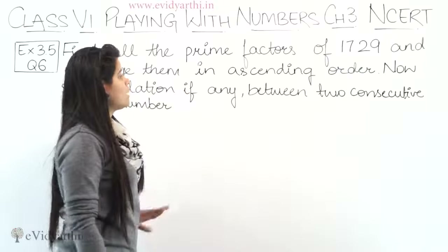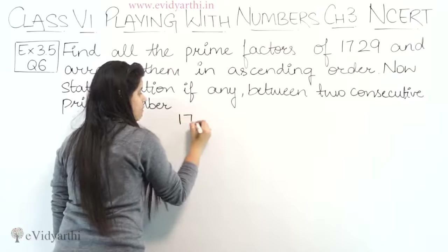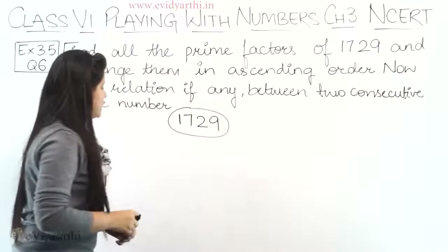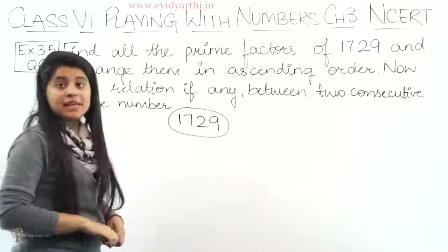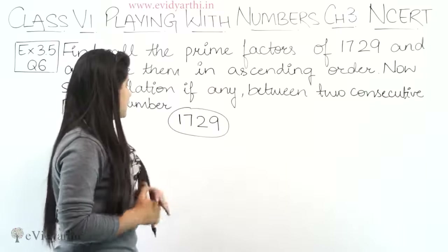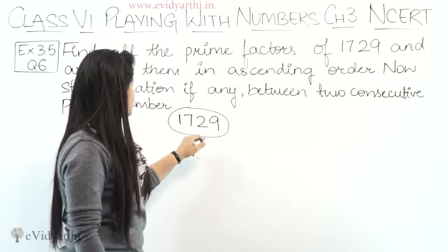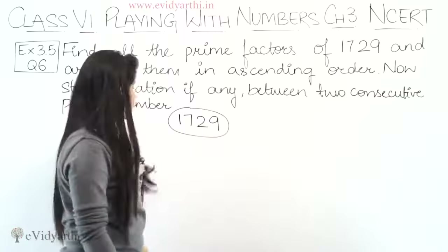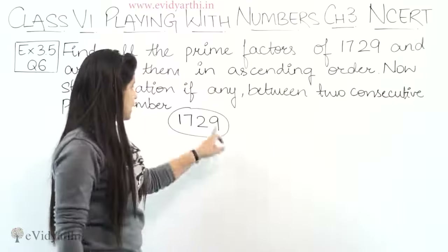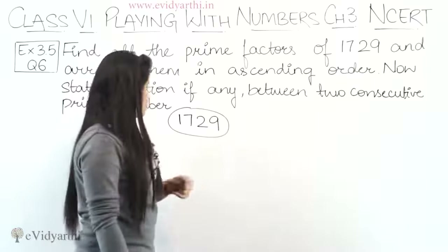First we find the prime factors of 1729. From the 2 times table, it is not divisible because the last digit is 9. From the 3 times table — digit sum: 1+7+2+9 = 19 — it doesn't divide. From the 5 times table it doesn't divide either.